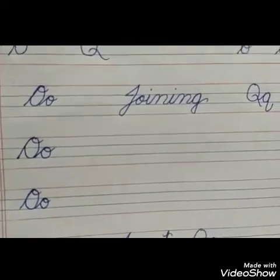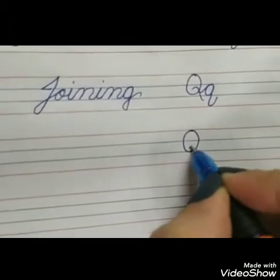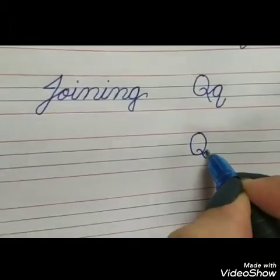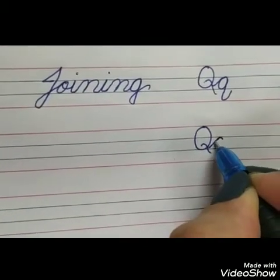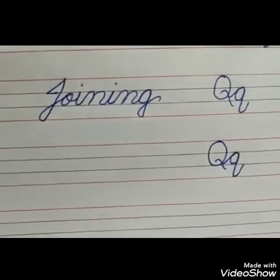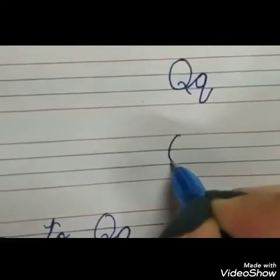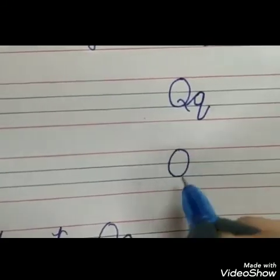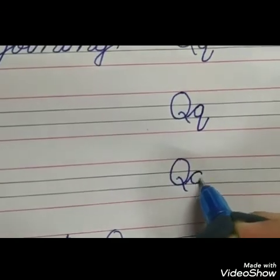Now let's move to capital Q and small Q joining. First make capital Q, then from the third line touch the bottom of the capital Q and make small Q.